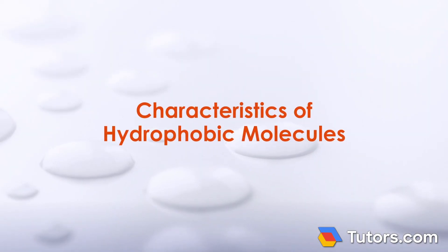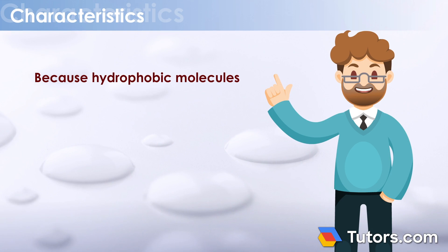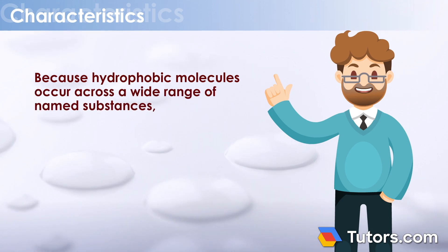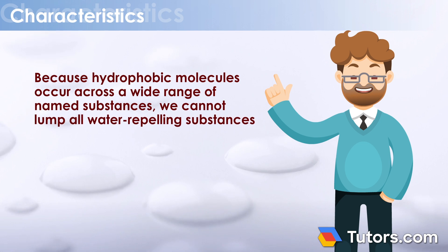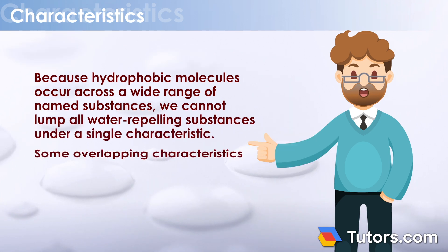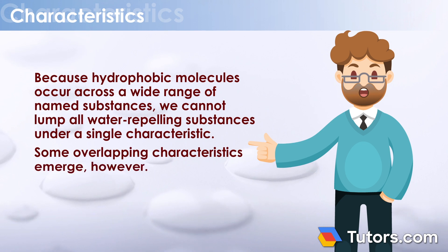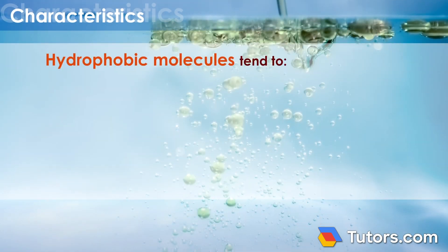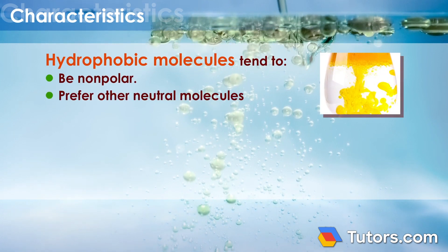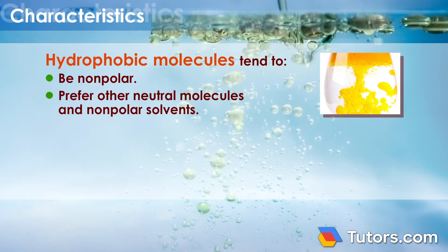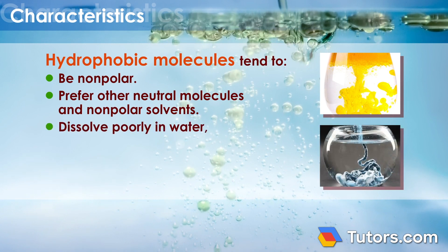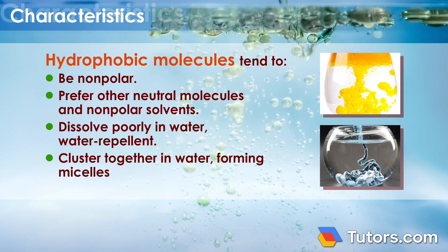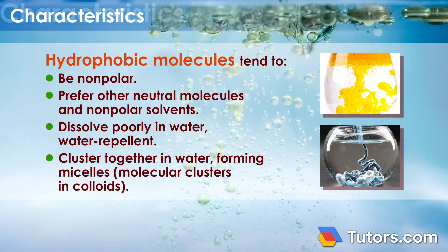Characteristics of Hydrophobic Molecules: Because hydrophobic molecules occur across a wide range of named substances, we cannot lump all water-repelling substances under a single characteristic. Some overlapping characteristics emerge, however. Hydrophobic molecules tend to be nonpolar, prefer other neutral molecules and nonpolar solvents, dissolve poorly in water, and are water repellent. They also cluster together in water, forming micelles, molecular clusters, and colloids.